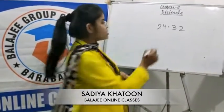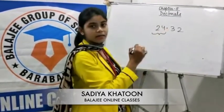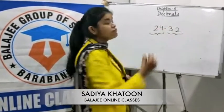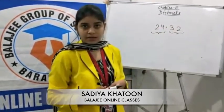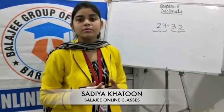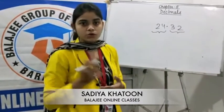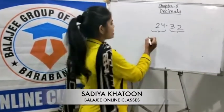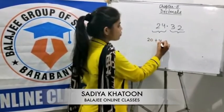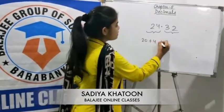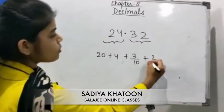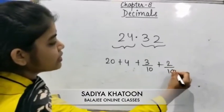This is the whole number part and this is the fractional part. If you have to write the decimal in expanded form, you are going to write it as 20 plus 4 plus 3 upon 10 plus 2 upon 100.